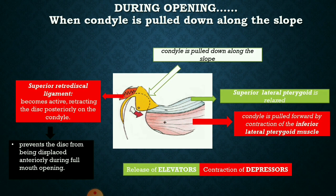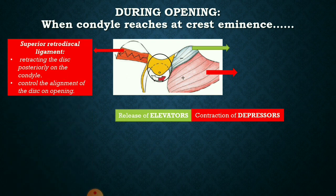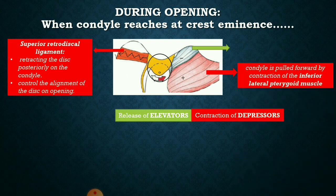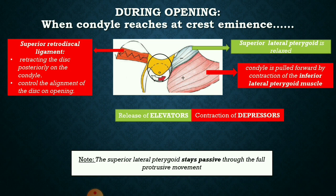When the condyle further reaches the crest of the eminence, the superior retrodiscal ligament undergoes even greater contraction to retract the disc posteriorly and control disc alignment during opening. The inferior lateral pterygoid again contracts to pull the condyle forward, the superior lateral pterygoid remains relaxed, elevators remain relaxed, and depressors remain contracted. Notably, throughout the entire opening procedure the superior lateral pterygoid stays passive. The actions of the superior lateral pterygoid and superior retrodiscal ligament are always opposite — when one relaxes, the other contracts.